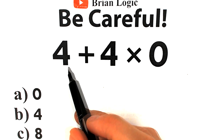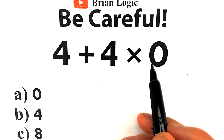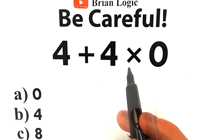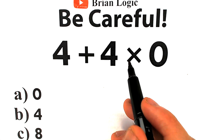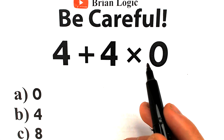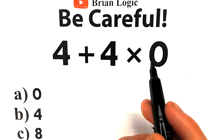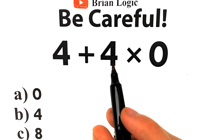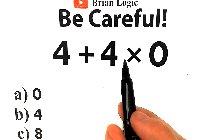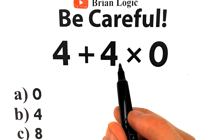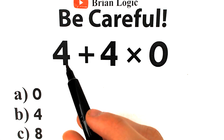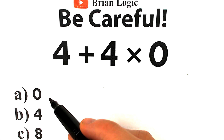What question do we have? We have 4 plus 4 times 0. Seems pretty basic, seems pretty easy. We have a very simple addition, very simple multiplication — we have 4, 4, 0 — so it's not a huge value. We have a regular expression without any exponent powers, which is really great. Let's pause the video and try to solve it by yourself.